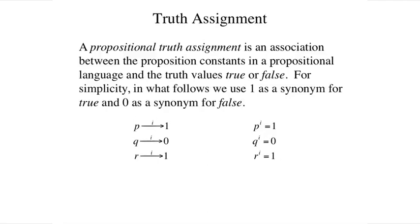Formally, a truth assignment for propositional logic is a mapping assigning a truth value to each of the simple sentences in the language. In what follows, we use the symbol 1 as a synonym for true, and 0 as a synonym for false. We refer to the truth value assigned to a propositional sentence using a truth assignment i by superscripting the sentence with i as the superscript.